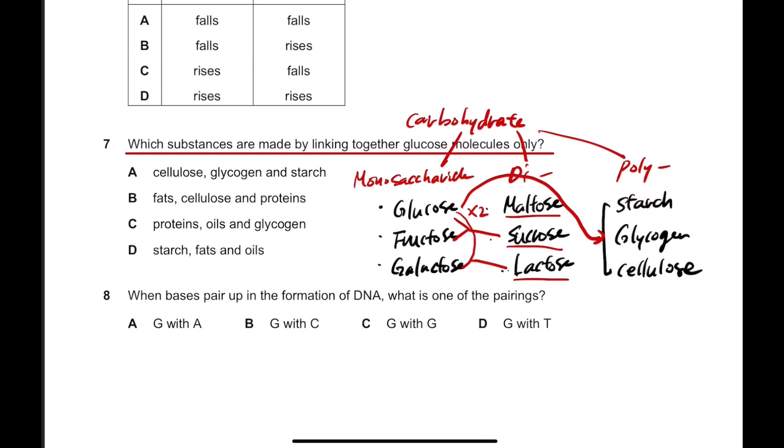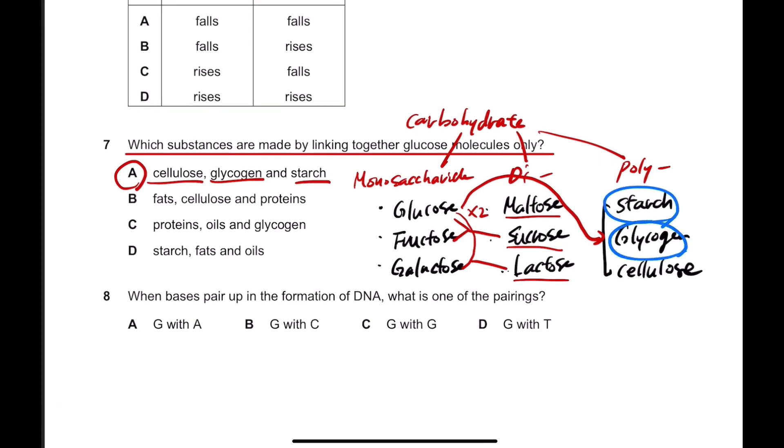So you can see that A, cellulose, glycogen, and starch, are found here, which all belong to carbohydrates. And like I said before, they are made of glucose molecules. All of them are made of glucose molecules. They are actually made of different types of glucose molecules, but in IGCSE level, you guys don't have to know that. So anyways, the answer is A.